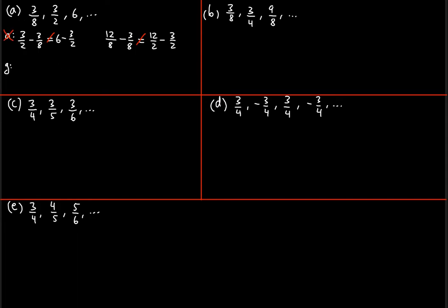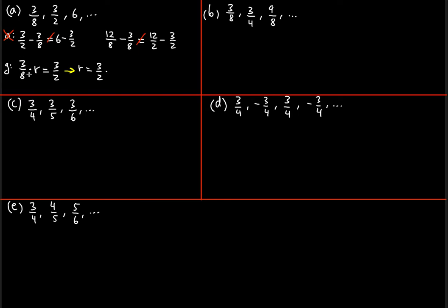Now let's check geometric. For a geometric sequence, we take the first term 3/8 times the common ratio r, and that should give us the next term 3/2. Solving for r, we divide both sides by 3/8, so r equals 3/2 divided by 3/8, which is the same as 3/2 times the reciprocal 8/3.